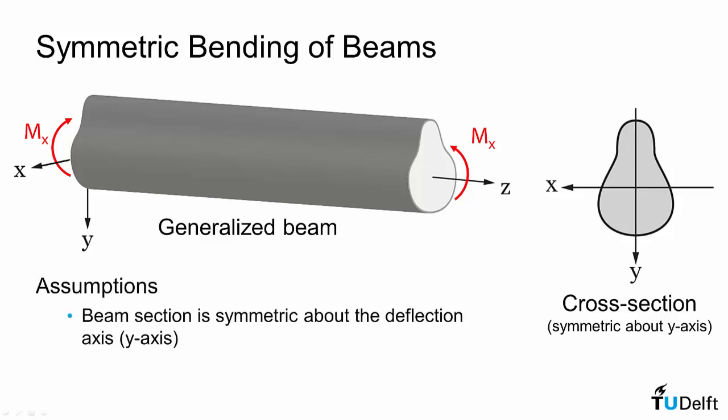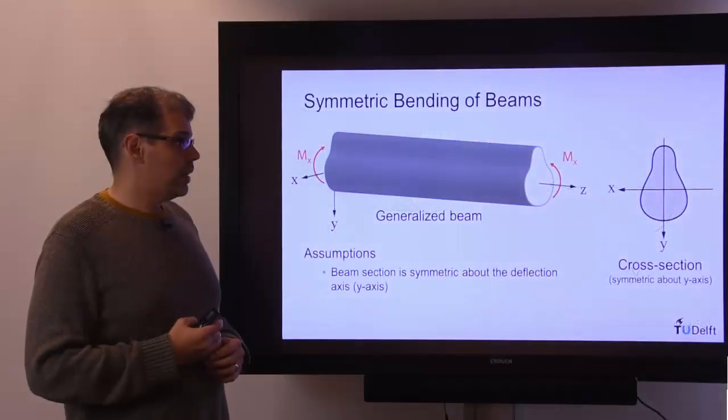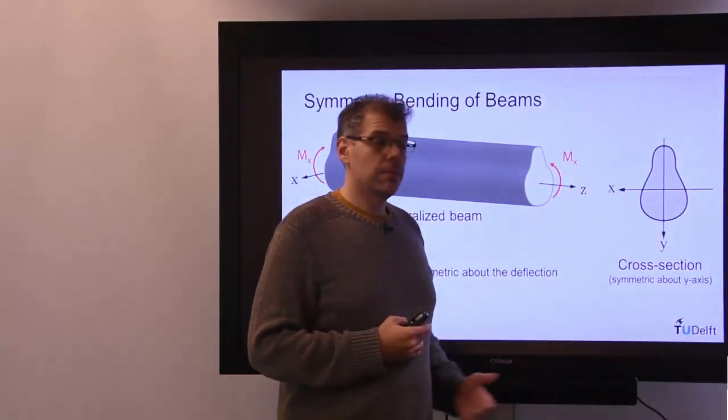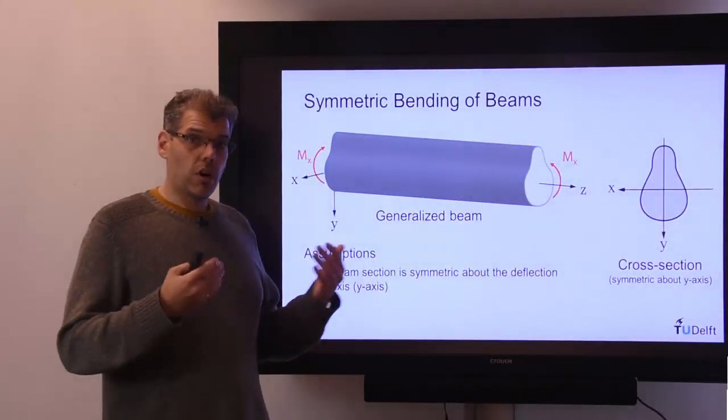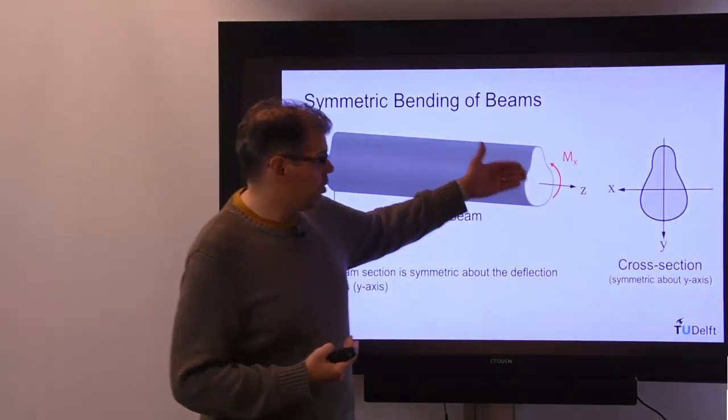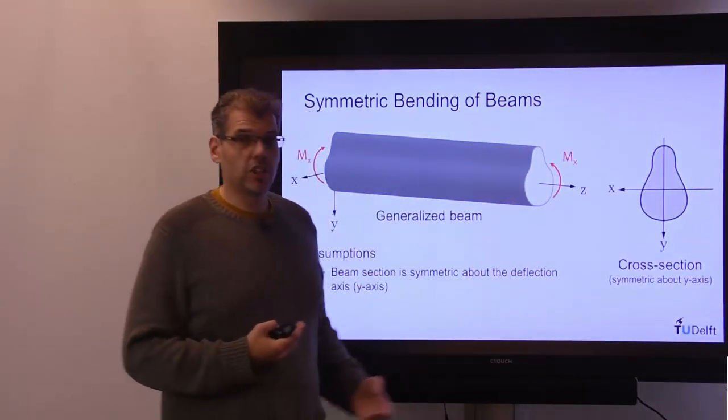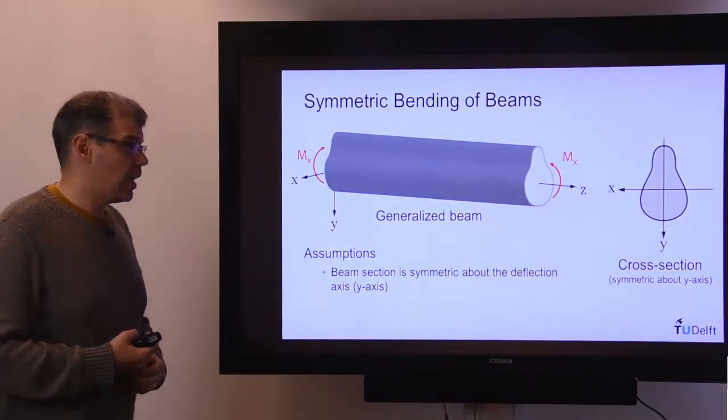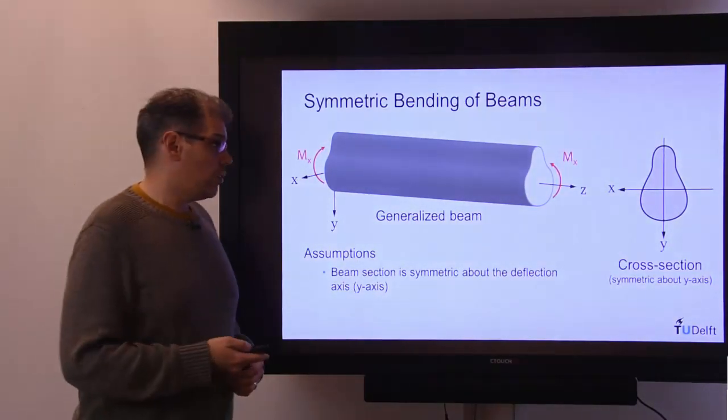Now for a generalized symmetric beam, we're going to make a few assumptions. The first assumption is the cross-section can be any general shape, however the symmetric aspect comes from the fact that the cross-section of the beam will be symmetric across the plane in which the deformation occurs.